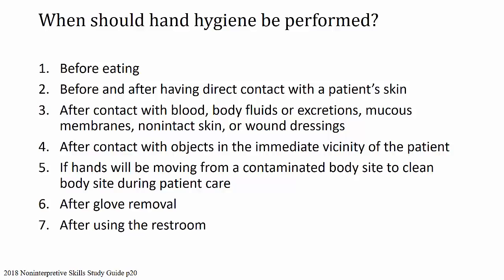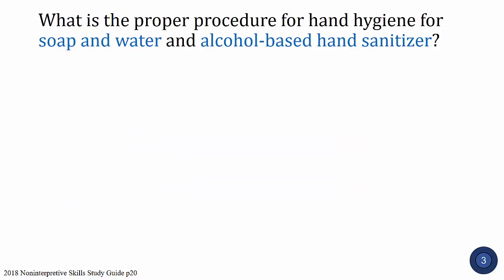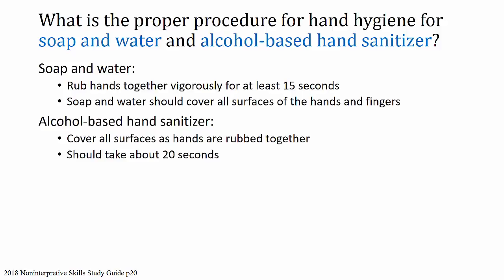Next question: what is the proper procedure for hand hygiene for soap and water and alcohol-based sanitizer? For soap and water, you should rub your hands together vigorously for at least 15 seconds, covering all surfaces of the hands and fingers. For alcohol-based hand sanitizer, you should cover all surfaces as the hands are rubbed together, and as the hand sanitizer dries it should take about 20 seconds.